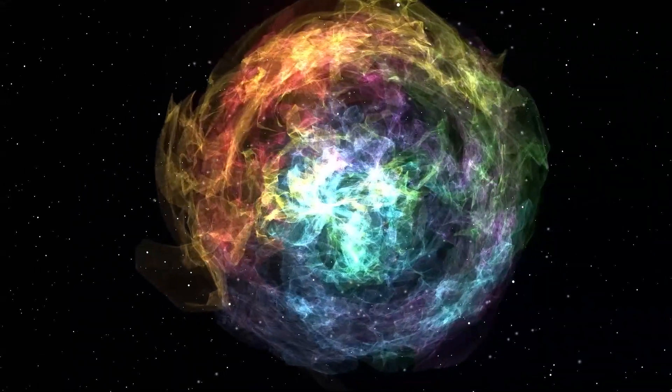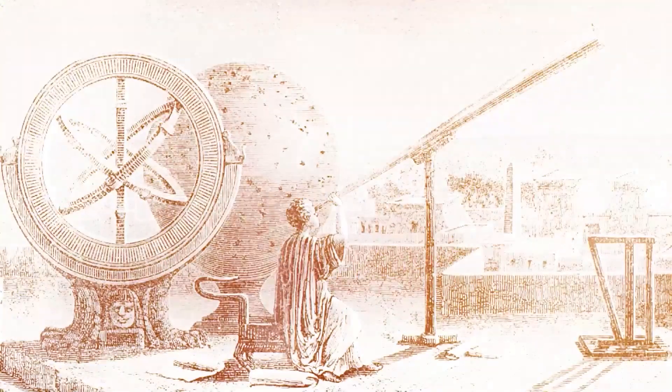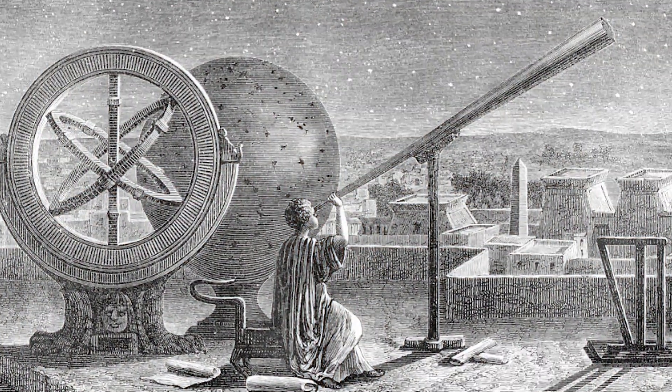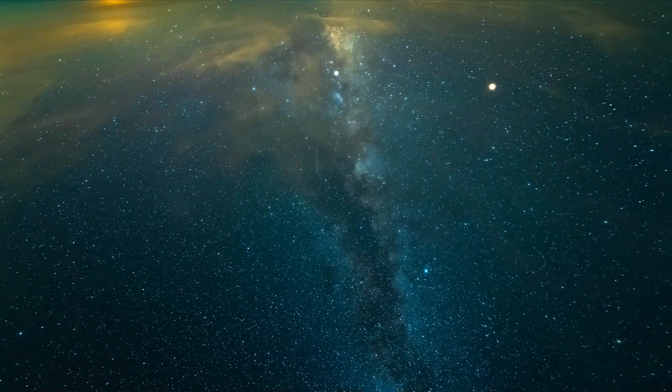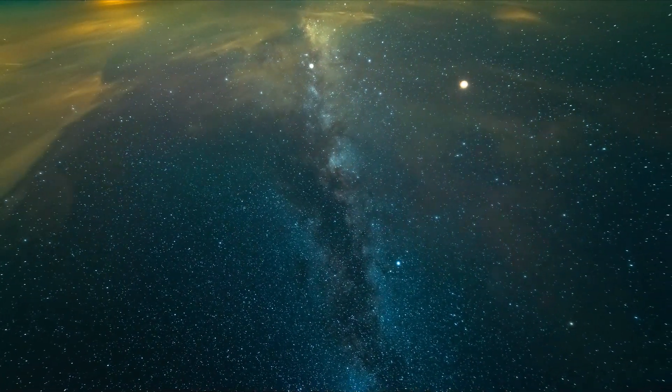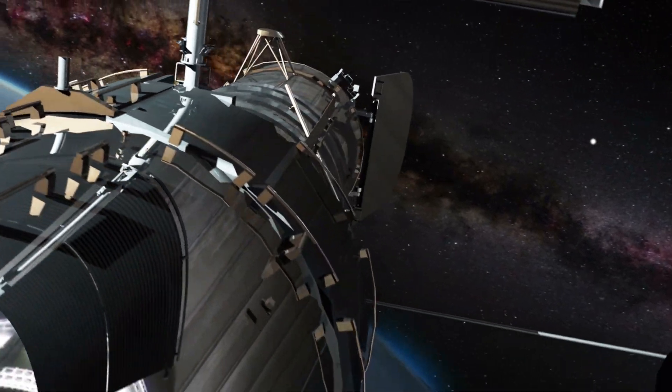Supernovae were first discovered in 185 AD, when Chinese astronomers suddenly saw a strange guest star appear in the night sky, and it stayed visible in the sky for the next eight months. It was the first known observation of a supernova in human history. But there have been other sightings from here on Earth.